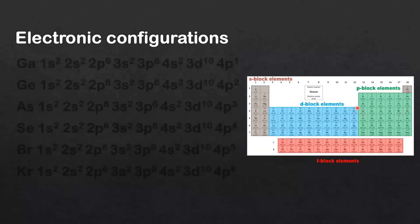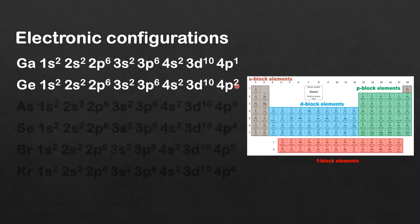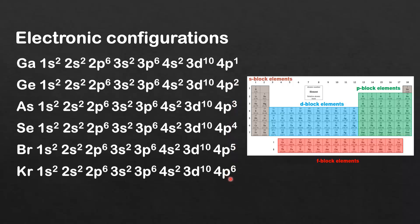Finally, we look at the electronic configurations for gallium to krypton. These are all p-block elements filling the 4p sublevel, ending with krypton, which like all noble gases has a full p sublevel. And there you have it—the electronic configurations for the first 36 elements.